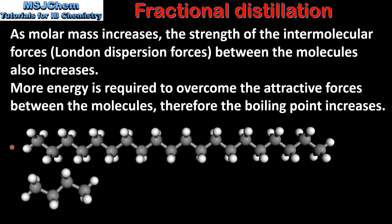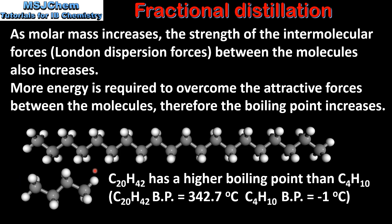Here we have two examples of hydrocarbon molecules that make up the crude oil mixture. At the top we have C20H42, at the bottom we have C4H10. Which one will have the higher boiling point? C20H42 has a higher boiling point than C4H10. The boiling point of C20H42 is 342 degrees C, and the boiling point of C4H10 is negative 1 degrees C. The reason for this is that C20H42 has a higher molar mass, therefore it has stronger intermolecular forces between the molecules, giving it a higher boiling point.